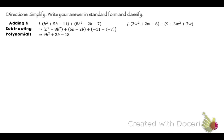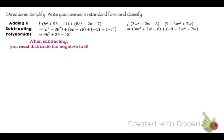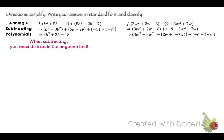This next one is important. When subtracting, you must distribute the negative first — that is super, super important. You're distributing the negative to all of those terms, and it becomes a plus sign. So that becomes negative 9, negative 3w, and negative 7w. Now it's the same as addition — combine like terms: 3w squared minus 3w squared is nothing, 2w minus 7w is negative 5w, negative 6 minus 9 is negative 15.